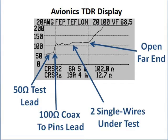The first trace shows the coax test lead at 50 ohms, then the socket test lead rising up to 100 ohms, and then the trace for the cable under test, with impedance variations as the two single wires vary in distance from each other during their run through the harness. The upward excursion at the far end indicates an open. Two cursors mark the start and the end of the run, showing the distance at 19 feet, 4 inches.